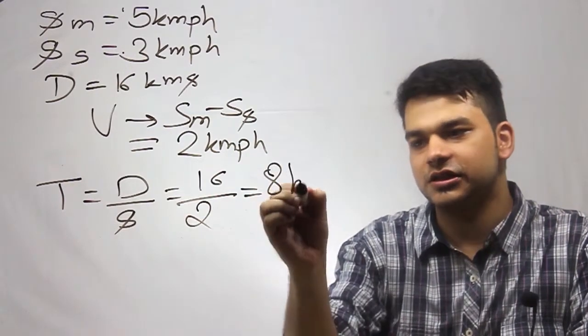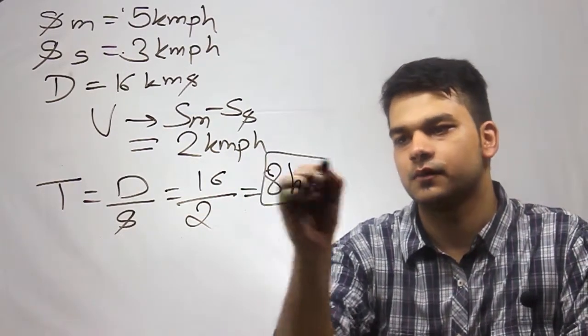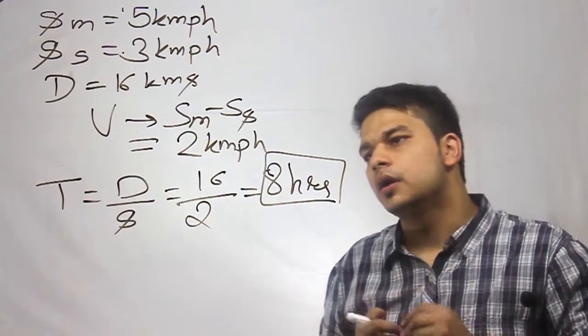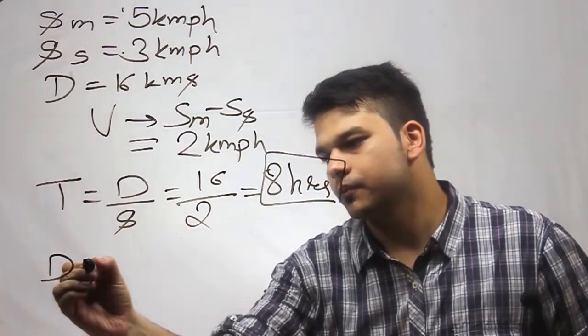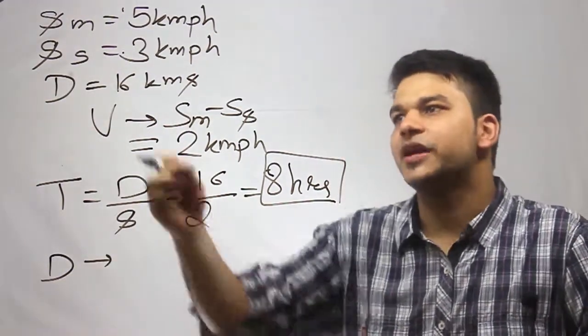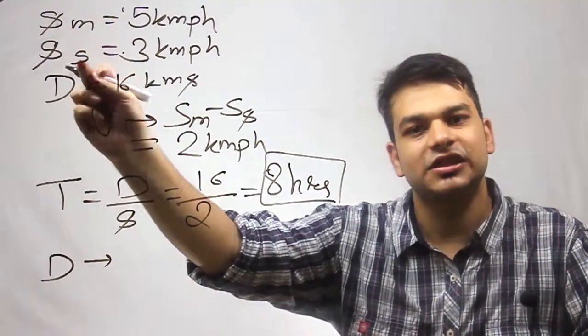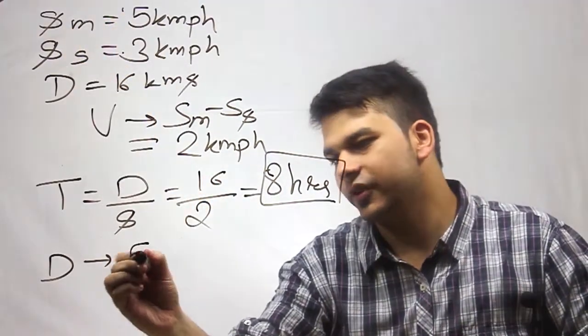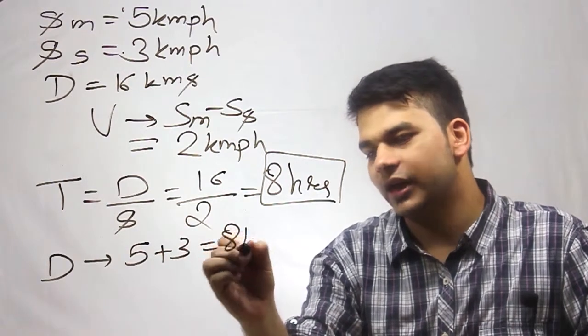Now in case of downstream, the total speed will be speed of man plus the speed of the stream. So this will be 5 plus 3, which is equal to 8 kilometers per hour.